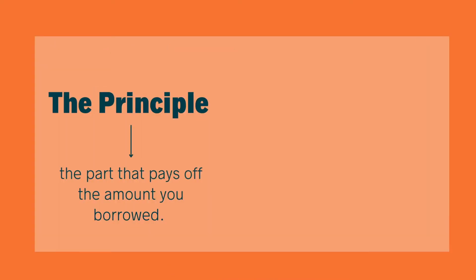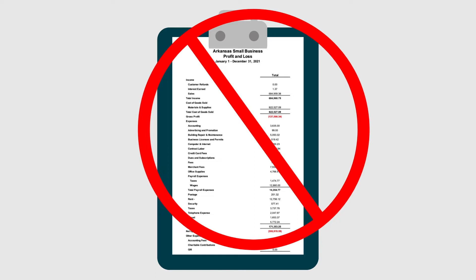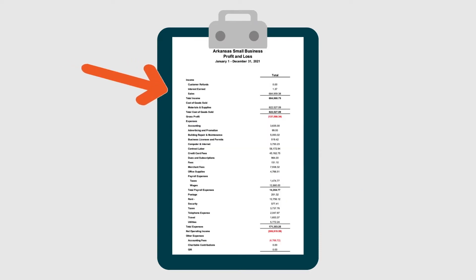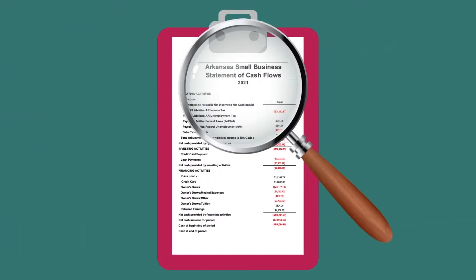Number one: principal payments on loans. A payment on a loan is made up of two parts — the principal, which is the part that pays off the amount you borrowed, and the interest, the price you pay the lender to borrow their money. When you make this payment, the principal portion will not appear on your P&L, but rather on your statement of cash flows. Only the interest portion will show up on your P&L, and it's usually labeled interest expense.